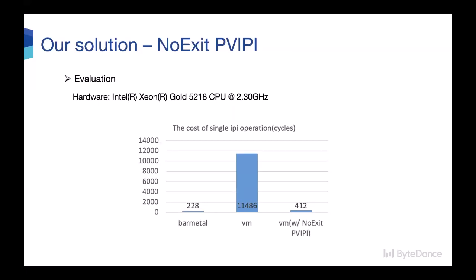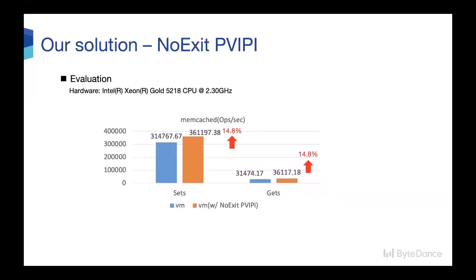Let's see the test result of the low-exit PV IPI. After adopting low-exit PV IPI, the cost of a single IPI operation in the VM decreased from 11,486 to 412 cycles. Single PV IPI can perform on the level of bare metal. From the perspective of application level, low-exit PV IPI can also improve throughput significantly. In our scenario, memcached set and get operations per second increased 14.8% after introducing low-exit PV IPI.